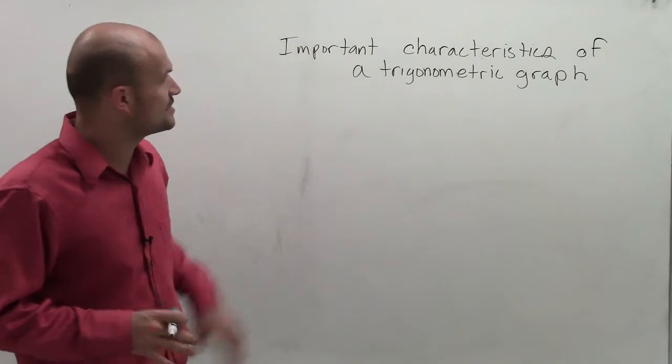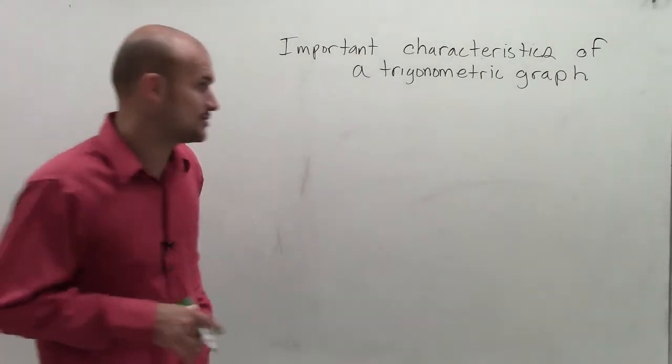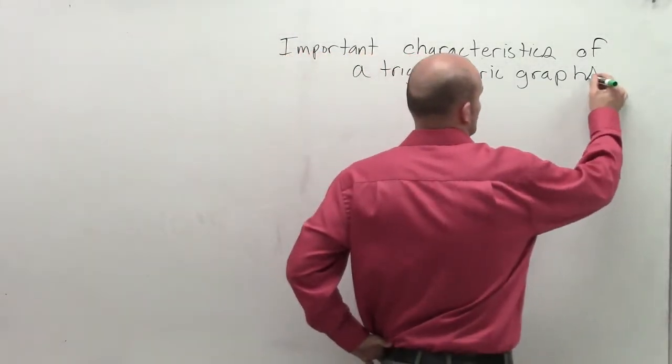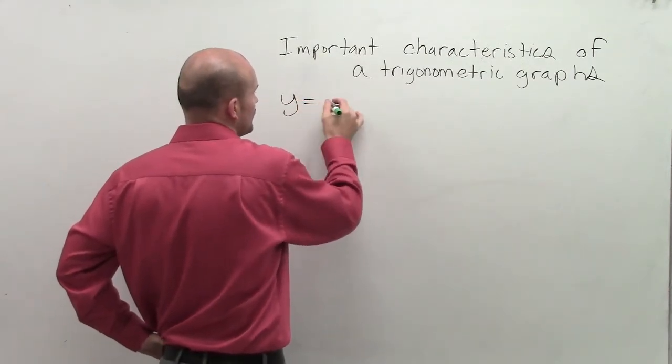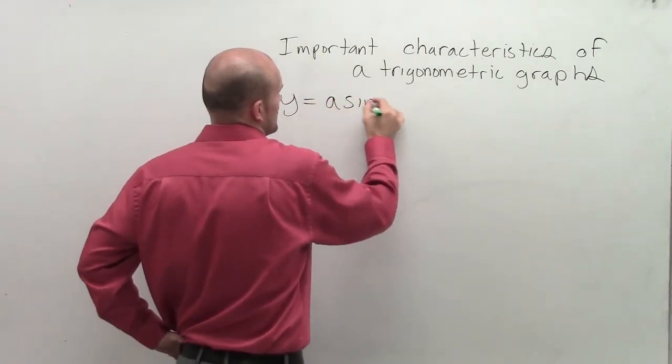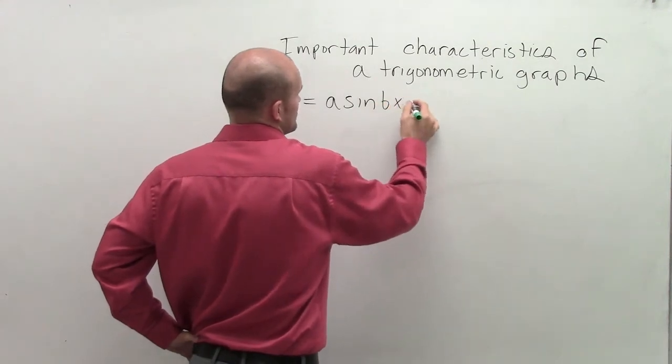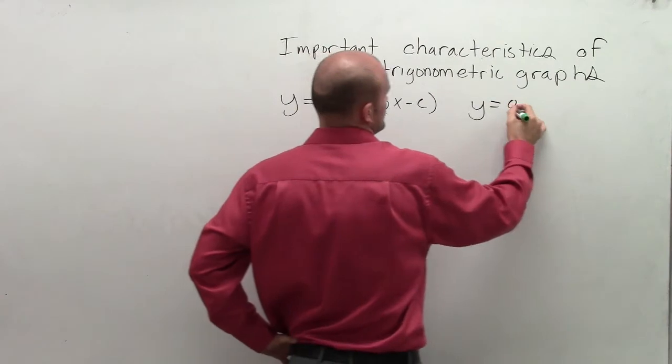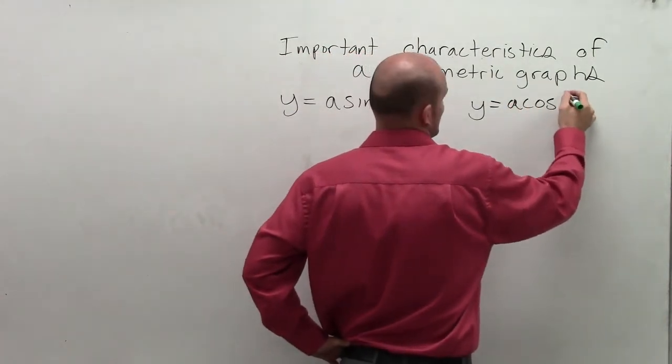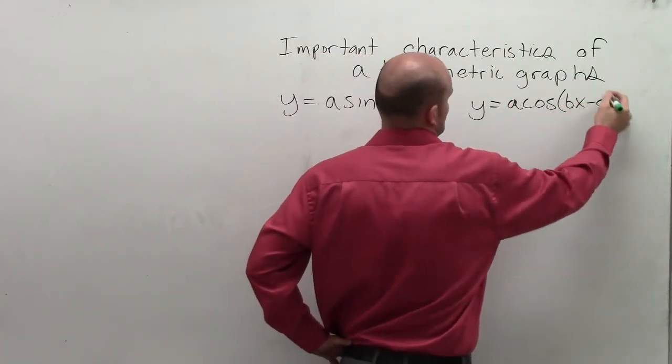All right. So let's look at some important characteristics of trigonometric graphs. We have y equals a sine of bx minus c, and y equals a times cosine of bx minus c.